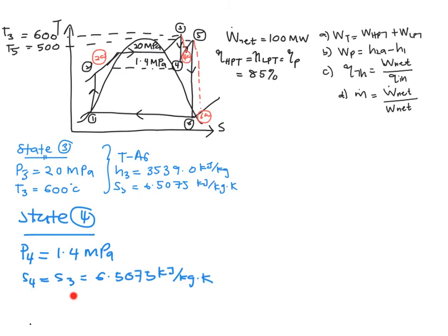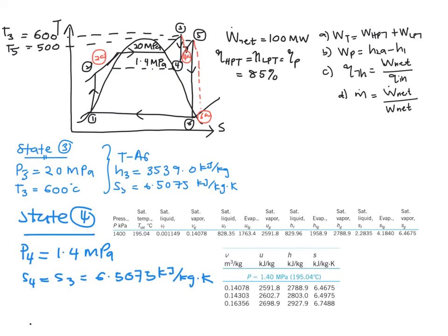Now you will need to verify your S, whether you are going to read it from the superheated table or from the mixture table. You have here table E5 and this one table A6, which is superheated region. If you have a look, your S value is 6.5075.